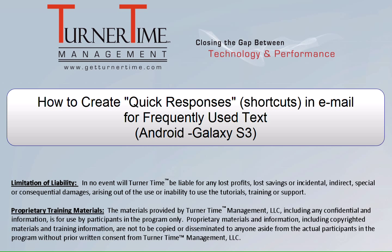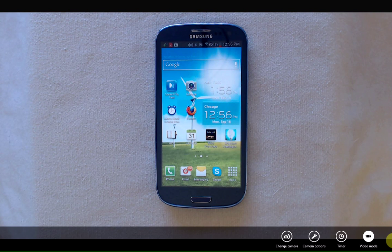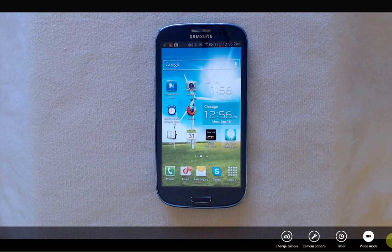Hello, and welcome to Turner Time Tutorials. This video is on how to create quick responses, which are auto-text shortcuts for frequently used text in email, on your Android Galaxy S3. To save time, you can create shortcuts or quick responses for text that you type frequently in email.